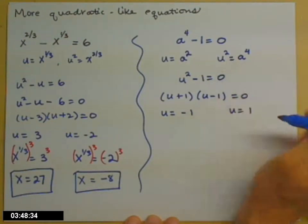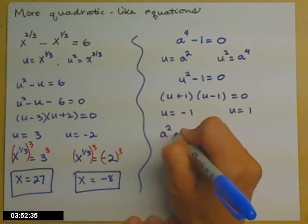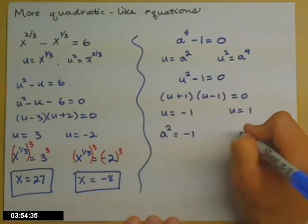Now I'm going back to a's. So u is the same thing as a squared. a squared equals negative one. a squared equals positive one.